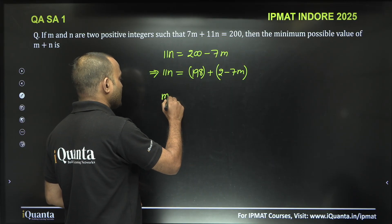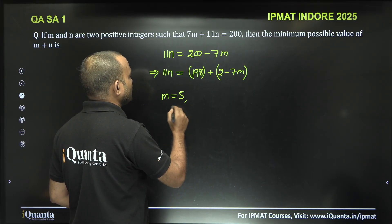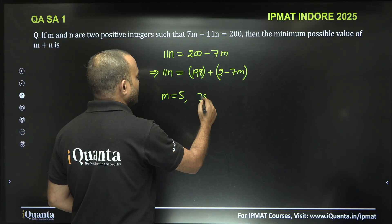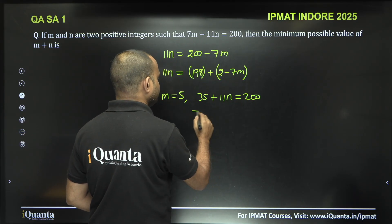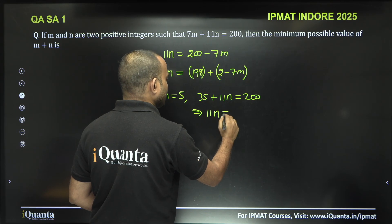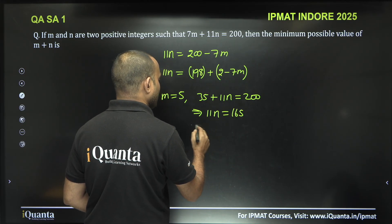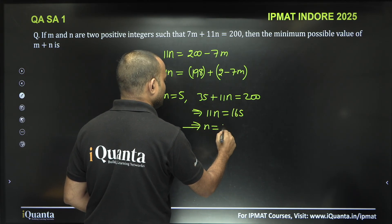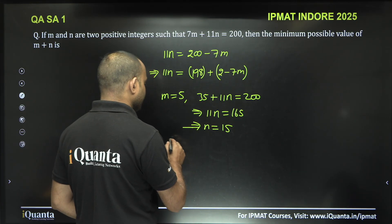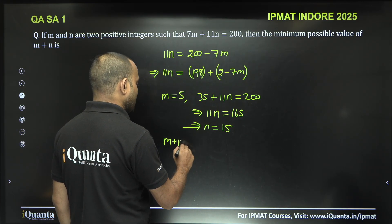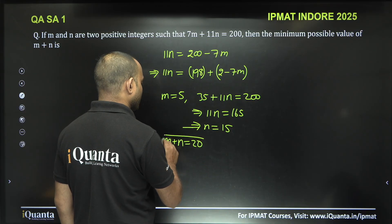So if I put m is equal to 5, what will happen? 35 plus 11n is equal to 200, so 11n is equal to 165, or n is equal to 15. If m is 5 and n is 15, we can say m plus n will be equal to 20 minimum.